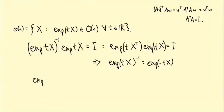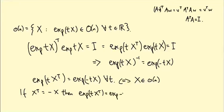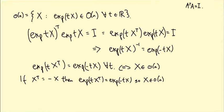So what we get is exp(tX^T) equals exp(-tX) for all t. And this is equivalent to — this is if and only if X is in the Lie algebra little o(n). Our first guess would be we want X transpose to equal minus X. So if X transpose equals minus X, then certainly this equation follows: exp(tX^T) equals exp(-tX). So in that case, X would be in the Lie algebra. So any antisymmetric matrix — anything where if we transpose it we get minus it — is in the Lie algebra of the orthogonal group. It turns out that's everything.